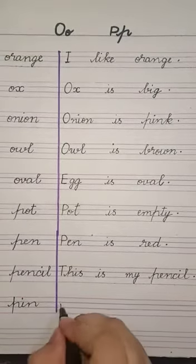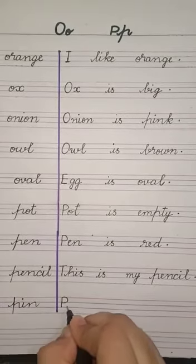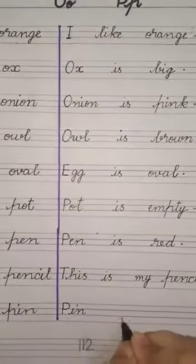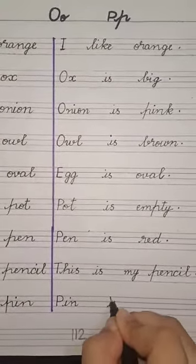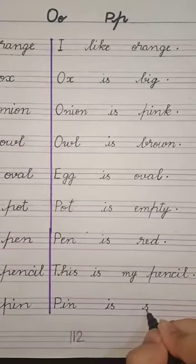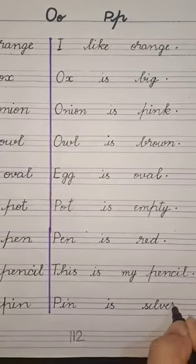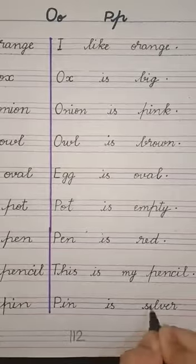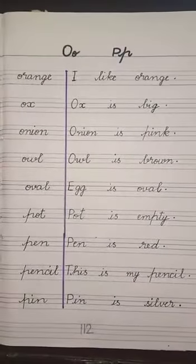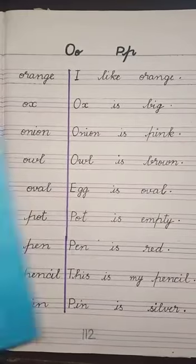Next step: Pin. Pin is silver. Capital P, I-N, pin. One finger gap, then 'is'. Again finger gap, and write silver: S-I-L-V-E-R. Silver. And last, full stop. This way our Paa word sentences are complete.